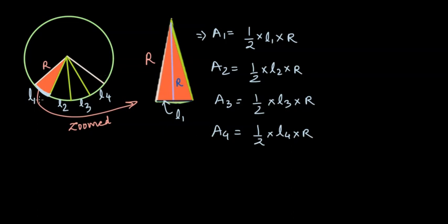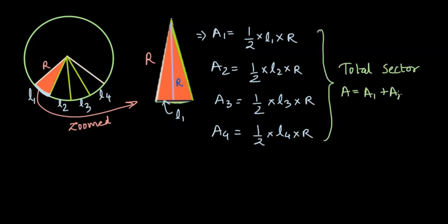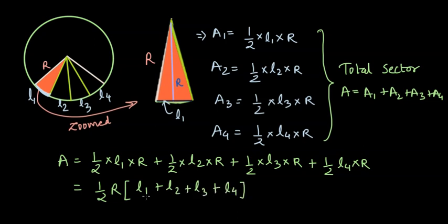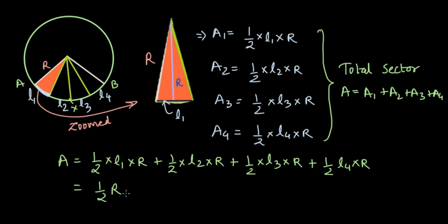I have drawn just four divisions, but there could be many. If I am interested in approximating the area of the sector, I can write it as A1 + A2 + A3 + A4, and so on. If I do some math over this, I can write the total area as A, and since ½ and R appear in every term, we can take them common and write ½ × R × (L1 + L2 + L3 + L4). This is nothing but the total arc length from point A to point B through point X — let's call this total arc length L.